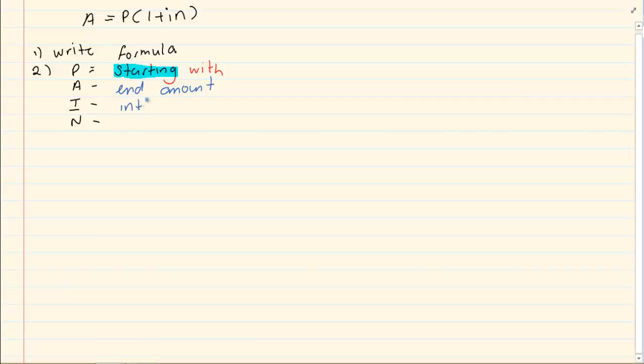I is the interest amount and N is for how long or how many times is it being invested.